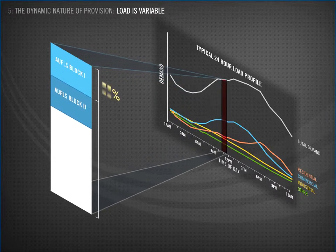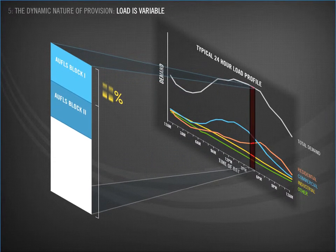As the day progresses and people are at home cooking dinner and heating their homes, the total demand increases too. The blocks now represent a much bigger proportion of total demand. This is because the same people are armed for AUFLS, but their use has increased.